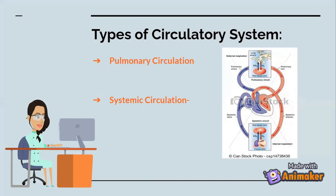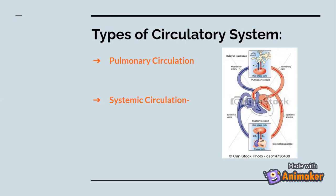Let's learn a little bit more about pulmonary circulation. Pulmonary circulation is where the blood is circulated between the heart and lungs, and the impure blood from the heart is carried to the lungs for purification, after which the lungs circulate back the purified blood to the heart.